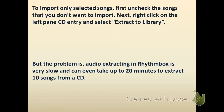If you want to import only selected songs, first uncheck the songs that you do not want to import, then right-click on the left-hand CD entry and click Extract to Library. Your files will be exported to the specified location. Note that the audio extraction in Rhythmbox is very slow — it can take up to 20 minutes to extract 10 songs from a CD, and that is an approximate time.